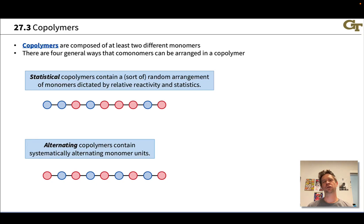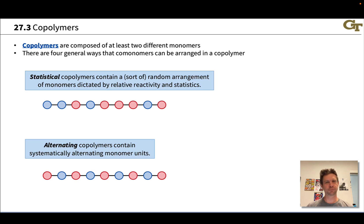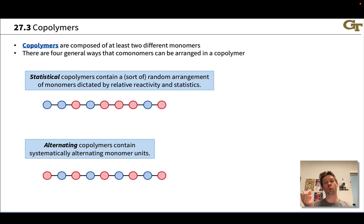It's possible to imagine creating a polymer from different types of monomers. A polymer containing multiple different types of monomer units with different structures is known as a copolymer, co-evoking the idea that we've got two or more monomer units along the polymer chain.